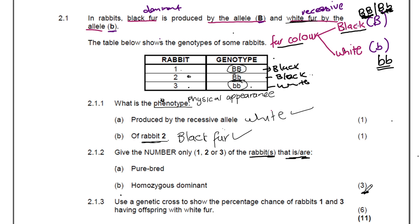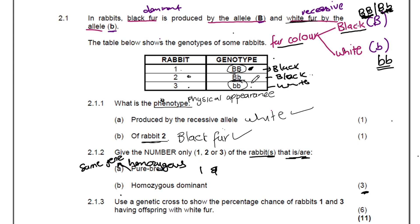Which one, two, or three of the rabbits are purebred? Purebred means homozygous — having the same gene. So it's a genotype that has the same gene: black and black, or white and white. Rabbit one has capital B capital B — black gene and black gene — giving black fur color. Rabbit three has small b small b — white gene and white gene — giving white fur color. So the answers are rabbit one and rabbit three — that's where we get our two marks.